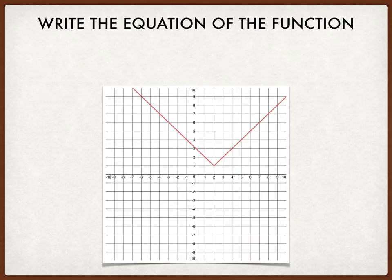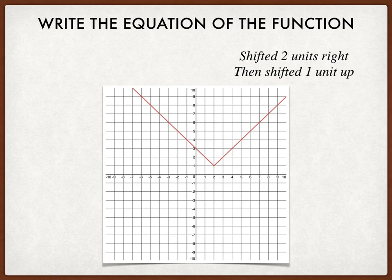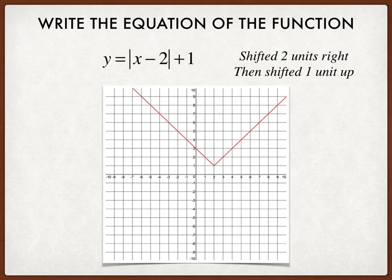Well, the steepness is the same, right? So the slope is 1 and negative 1. So that doesn't change. But my vertex is shifted 2 units to the right and then 1 unit up. So inside my absolute value bars, I'm going to have a minus 2 and outside of the bars, it'll be plus 1. This is the equation.